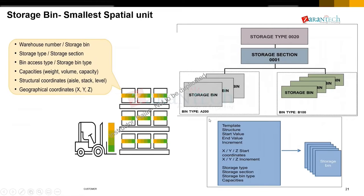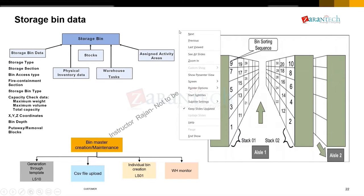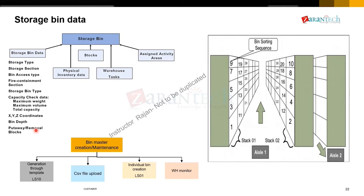The storage type, section, and bin are defined by the bin type. The storage bin data is a huge master data with several tabs: a bin data tab covering storage type, section, bin access type, fire containment section, XYZ coordinates for travel distance optimization, and bin depth. There's also a dedicated tab for physical inventory data — when cycle counts happen, whether the count was posted with or without difference.